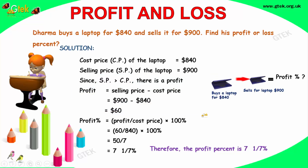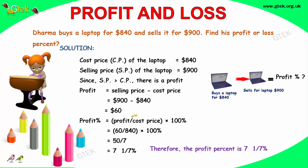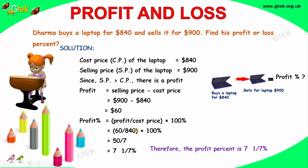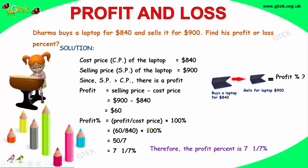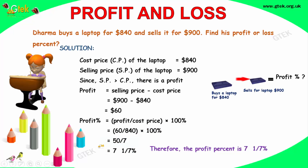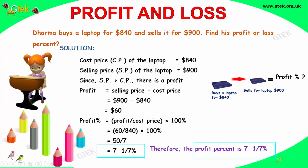If we talk about the profit percentage, the profit is $60. 60 divided by 840 cost price into 100, so it's 50 divided by 7, that's 7 and 1/7. So 7 and 1/7 percent is the profit percentage.